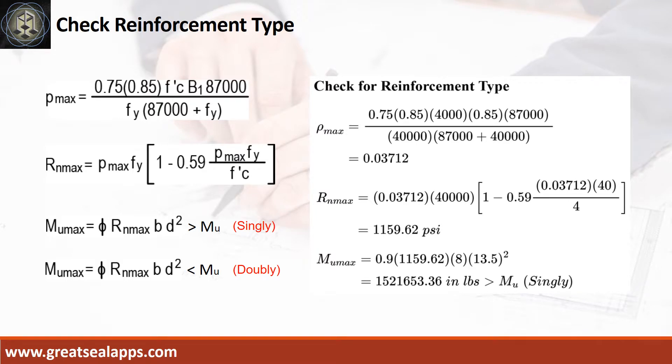The ρ max from the given design criteria is 0.03712. Then the maximum concrete beam design ratio Rn max equals 1,159.62 psi.